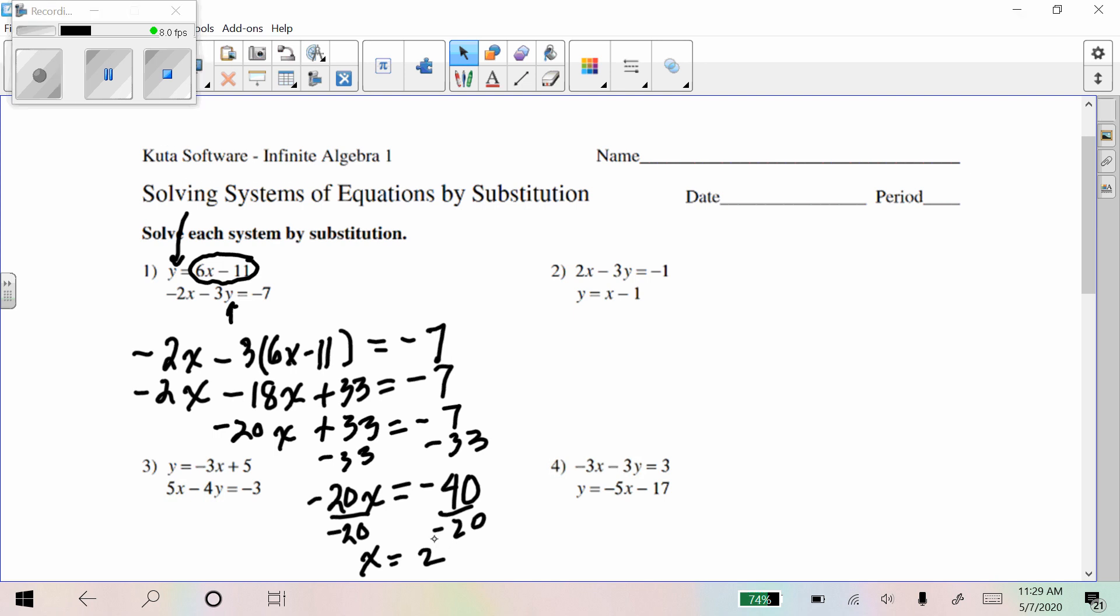I'm going to take this x is 2 here. And I'm going to put it in x in this equation, 6 times x minus 11. And that's 12 minus 11, which is 1. So my answer is x is 2, y is 1.